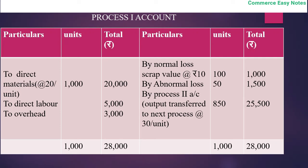Process 1 account has debit and credit sides. On the debit side: direct material 1,000 units at Rs. 20 = Rs. 20,000; direct labour Rs. 5,000; overhead Rs. 3,000. Normal loss is 10% of 1,000 = 100 units with scrap value Rs. 10 per unit = Rs. 1,000, credited on the right side. Actual output transferred to process 2 is 850 units at Rs. 30 per unit = Rs. 25,500.